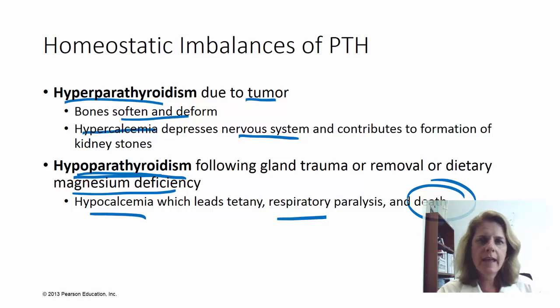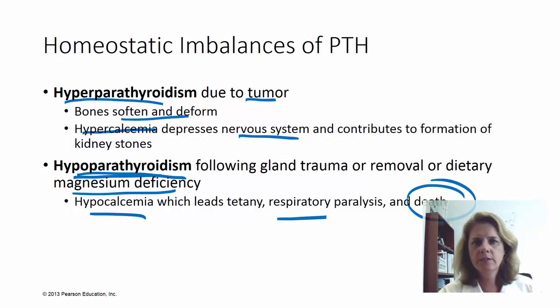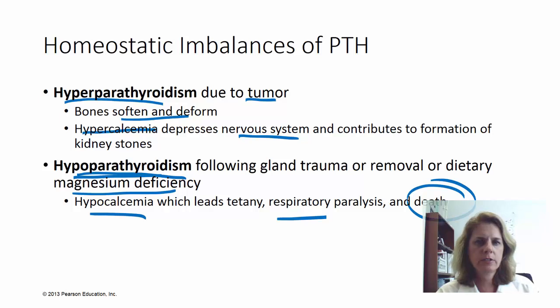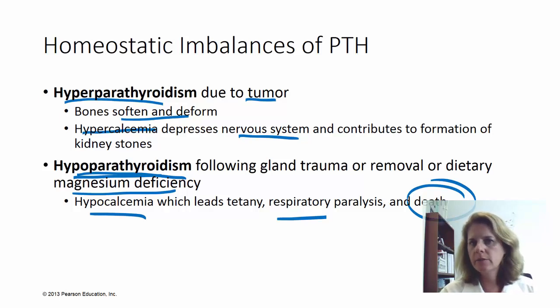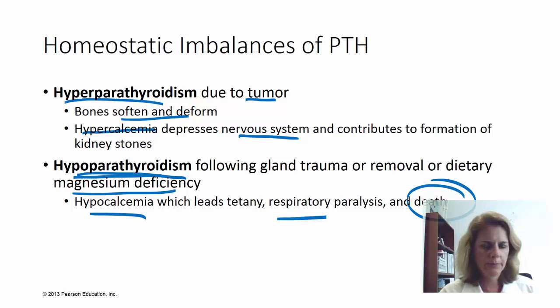Don't forget the antagonist — calcitonin is the hormone that does the opposite of PTH. We don't really know what it does in humans, but in calcium regulation you have parathyroid hormone and calcitonin working together. Calcitonin is made in the thyroid, but not by the same cells that make thyroid hormone — it's made by the parafollicular cells. That's the end of this lecture — I'll see you again.